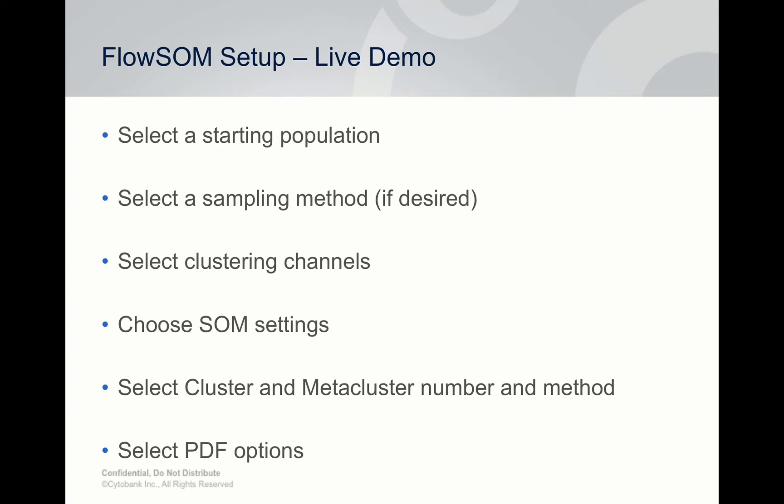After selecting a starting population, you choose a sampling method if needed — downsampling isn't required but is available for speed. Next, select the number of clustering channels, which follow similar rules to other algorithms. Then you choose the self-organizing map settings, select the cluster and meta-cluster numbers, and then select how you want to display the output.